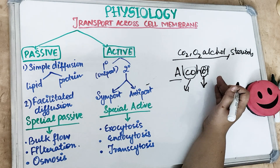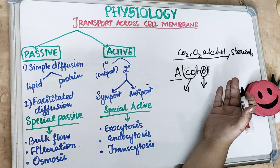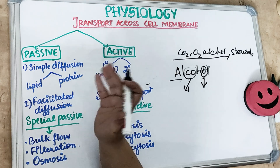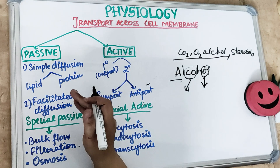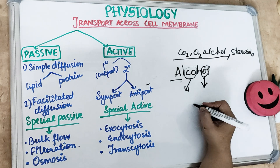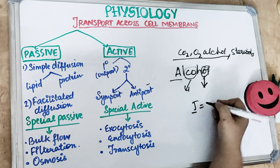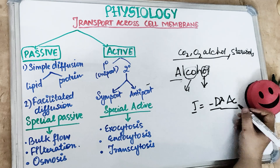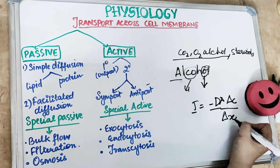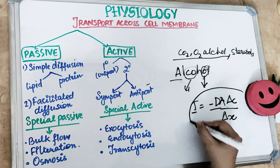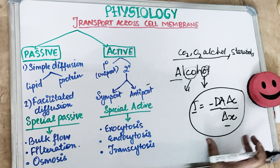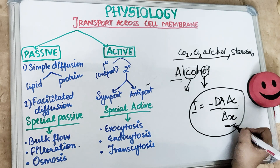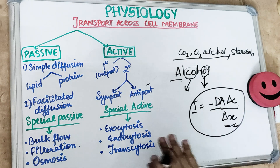Some respiratory gases also pass through simple diffusion via integral protein channels. There is Fick's law of diffusion: net transport J equals minus DA (diffusion coefficient) multiplied by delta C (concentration gradient) divided by delta X (thickness of the cell membrane).